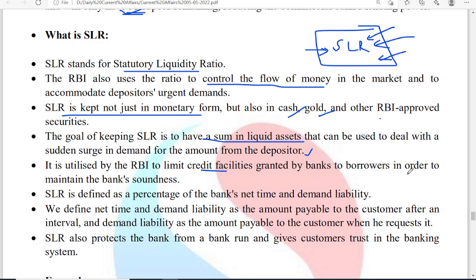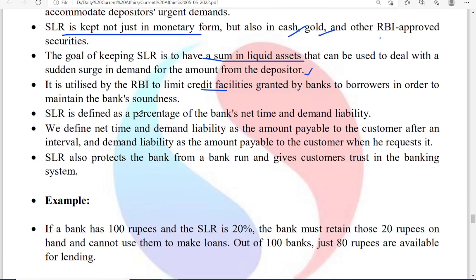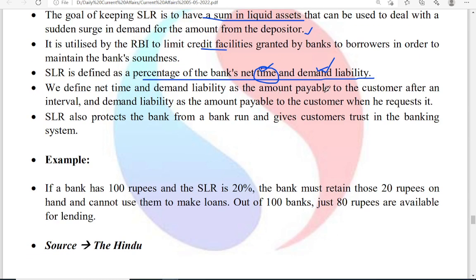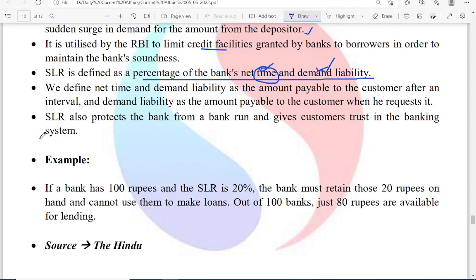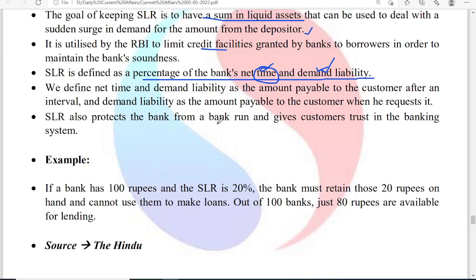SLR is utilized to limit the credit facilities granted by banks to borrowers. SLR is defined as a percentage of the bank's net time and demand liabilities. Time liability means fixed deposits; demand liability means deposits payable on demand. Demand deposits can be drawn at any time, whereas fixed deposits can be drawn only after the expiry of the term. SLR also protects the bank from bank runs and gives customers trust in the banking system.